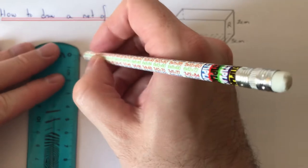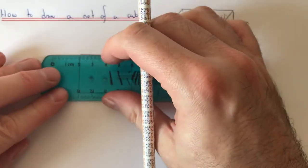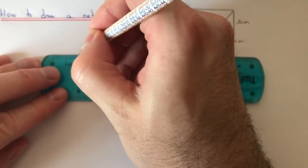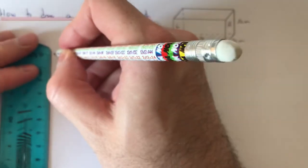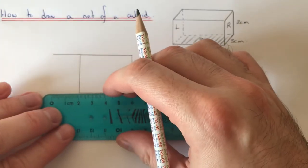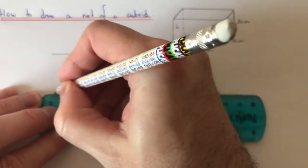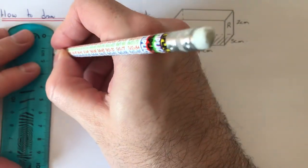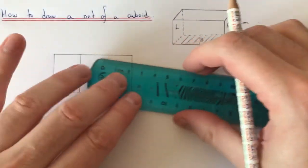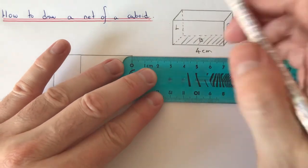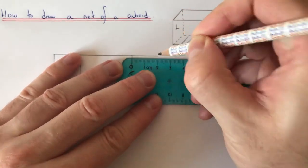So we've already got three centimeters here, so we just need to go out two centimeters. And if we did the same on the other side, so if you go out two centimeters on the right hand side.